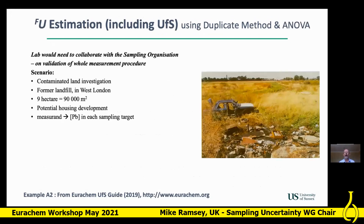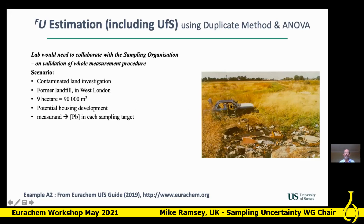I'll now talk about the second example — using the uncertainty factor to express measurement uncertainty when you include uncertainty from sampling. This is like a validation of the whole measurement process all the way from the lab out to the sampling. If you're going to try something like this yourself, you'd have to collaborate with the sampling organisation and have an integrated approach, as was discussed this morning.